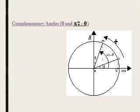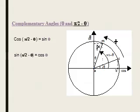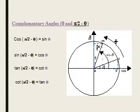Now, pi over 2 minus alpha, which is also in the first region where all the trigonometric lines are positive. But pay attention: cosine of (pi over 2 minus alpha) equals sine alpha, and sine of (pi over 2 minus alpha) equals cosine alpha. Tangent of (pi over 2 minus alpha) equals cotangent alpha, and cotangent of (pi over 2 minus alpha) equals tangent alpha.